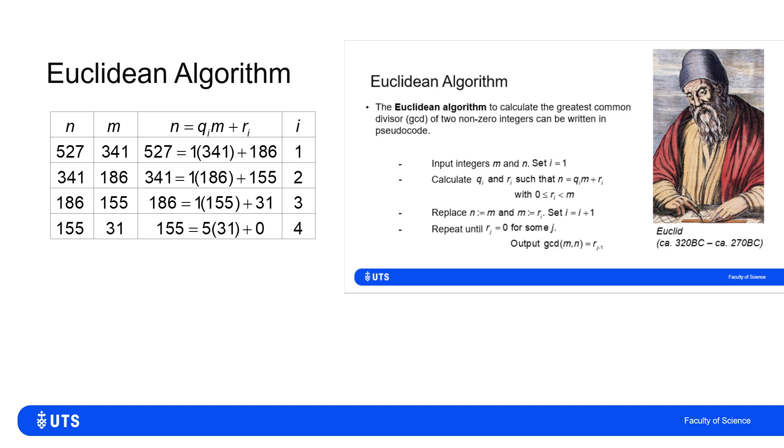So when i is 1, my first stage, I say that N can be written as 1 lot of M, 1 lot of 341, and that leaves a remainder of 186. So in the updating stage, I update my new N to my old M, so N becomes 341, and my new M becomes the remainder, which was 186 at the last step.